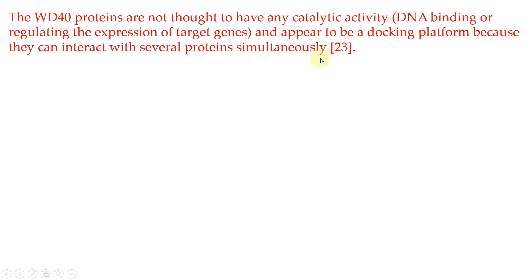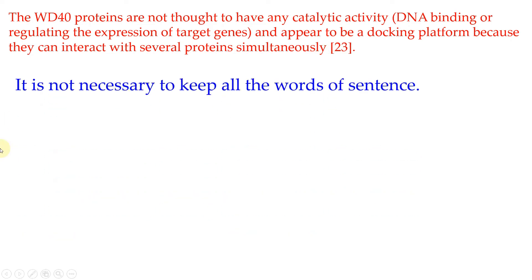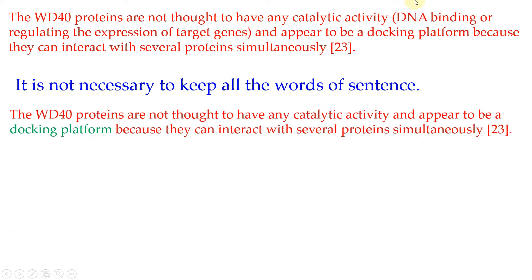If you are not a native speaker, process its meaning into your own language — like if you are an Urdu or Hindi speaker, you can process this line's meaning into your own words or your own language, then translate back into English. This line is short with no complex back-and-forth ideas. So let me take that whole line. I have copy-pasted it here. Now we try to understand: 'The WD40 proteins are not thought to have any catalytic activity, DNA binding, or regulating the expression of target genes, and appear to be a docking platform because they can interact with several proteins simultaneously.' It is not necessary to keep all the words. We can remove the parts inside brackets. Now the line is: 'WD40 proteins are not thought to have any catalytic activity and appear to be a docking platform because they can interact with several proteins simultaneously.'